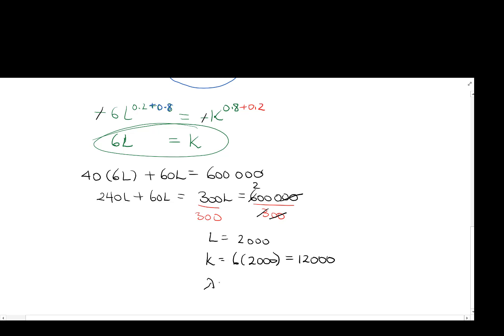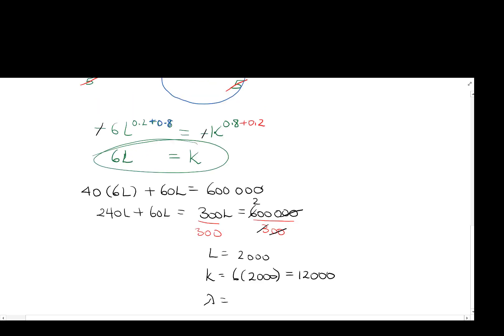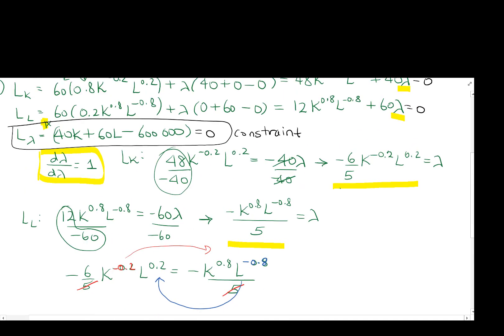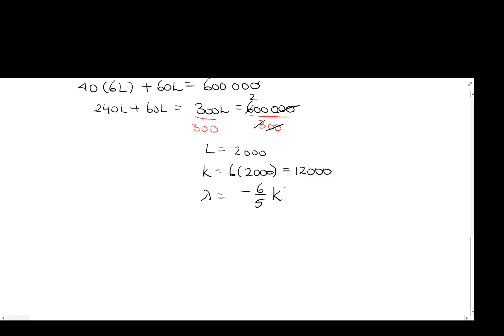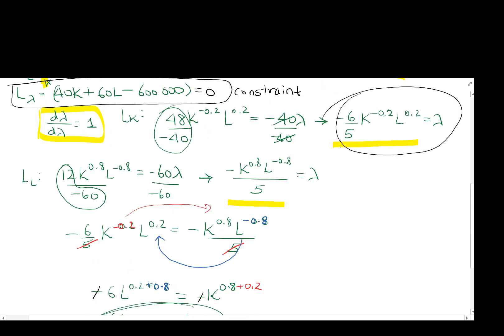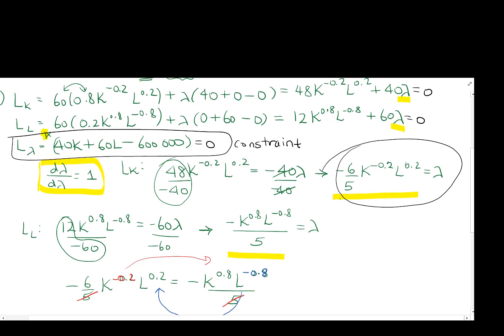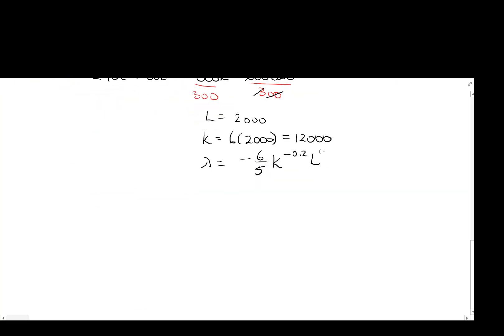And if we would like, we can also go solve for lambda. Lambda also actually has a meaning. And I'll write it down in a minute here what lambda means. So now finally, we can go solve for lambda if we'd like. So in this case, mine is negative 6 fifths K to the negative 0.2, L to the 0.2, I believe is lambda. Forgive me for the scrolling. Negative 6 fifths K to the negative 0.2, L to the 0.2. Here's your lambda, so that's negative 6 fifths, 12,000 to the negative 0.2, 2,000 to the 0.2. And we can go figure out what that is equal to also if we would like.